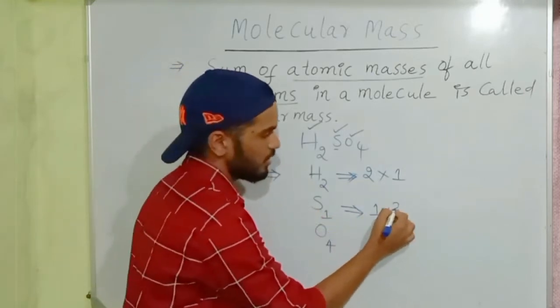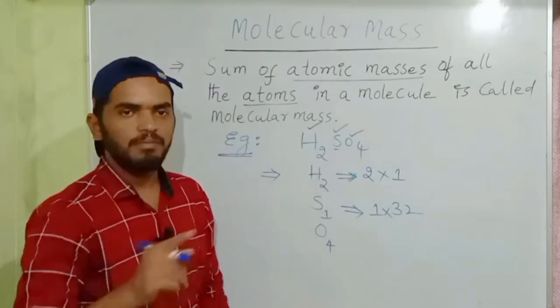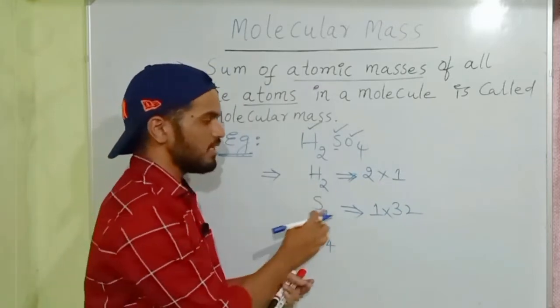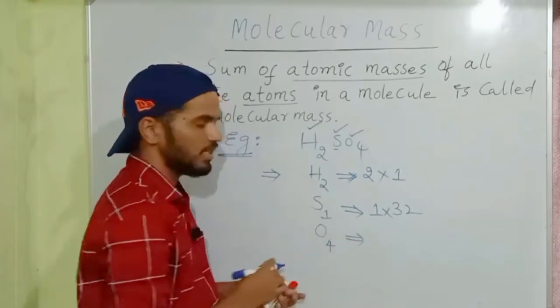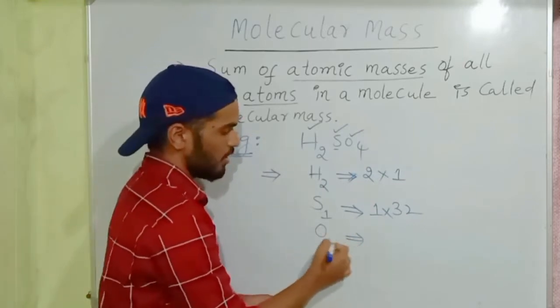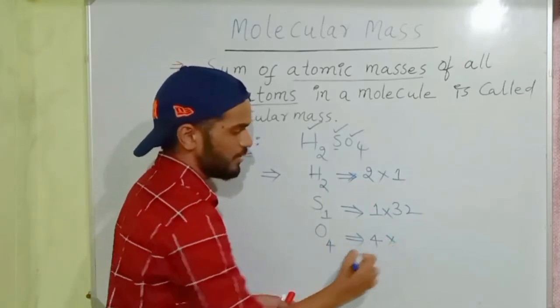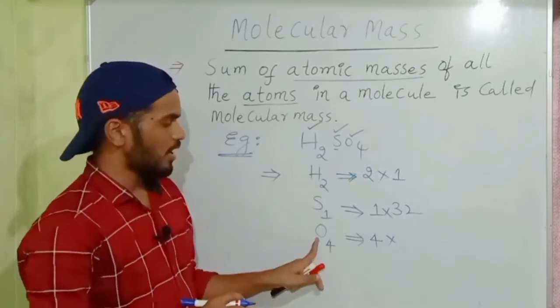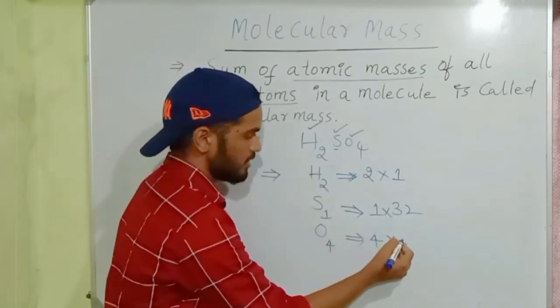The atomic number is 16 and atomic mass is 32. Now take oxygen. How many atoms of oxygen is given? Four into - what is the atomic mass of oxygen? Atomic mass of oxygen is 16.